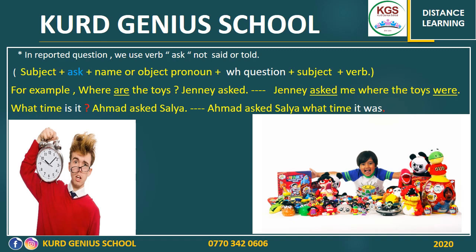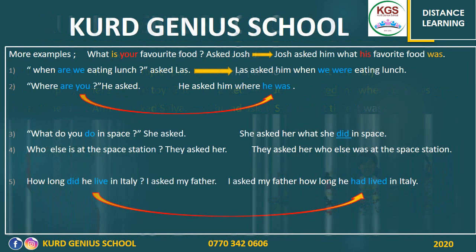Look at the second picture. 'What time is it?' — Ahmad asked Salia. So this is the direct question. When we change it to reported speech it becomes: Ahmad asked Salia... what kind of WH question do we have? 'What.' Write it down as it is — don't change it. After 'what' we should have the subject: 'it.' Then 'it' plus 'was' — why? Because 'is' is present simple, so you change it to past simple. So: 'Ahmad asked Salia what time it was.'